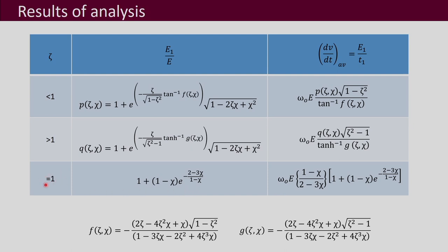For the critically damped condition, we obtained the expression for E1/E equal to 1 plus (1 minus chi) times e to the power of minus (2 minus 3·chi) over (1 minus chi). The average dv/dt, which equals E1 by T1, was also obtained and can be written compactly as (1 minus chi) divided by (2 minus 3·chi), multiplied by omega_0 times E.